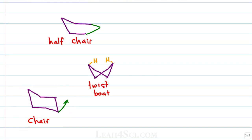In order to transition into the other version of the chair, we have to undergo the unstable boat conformation, which starts to look like a chair again except that both sides have their substituents facing up. If we redraw it like this, you can start to envision a canoe or a boat.